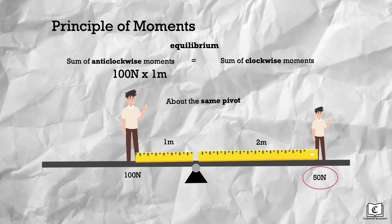What about small Jill? We take small Jill's weight, which is 50 newtons, multiplied by his perpendicular distance from the pivot, which is 2 meters.